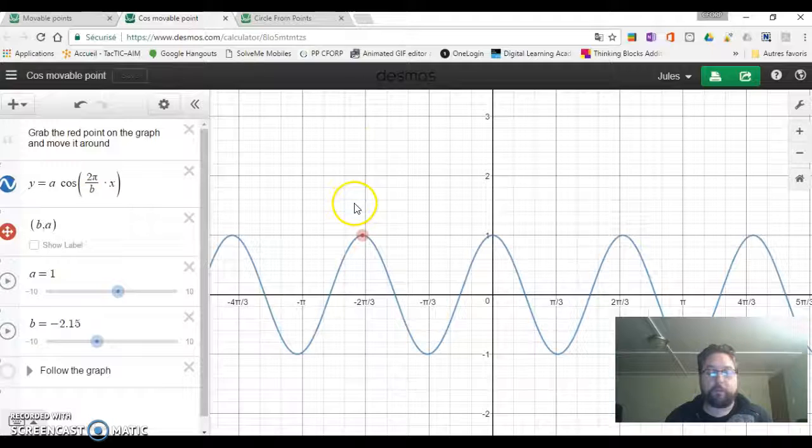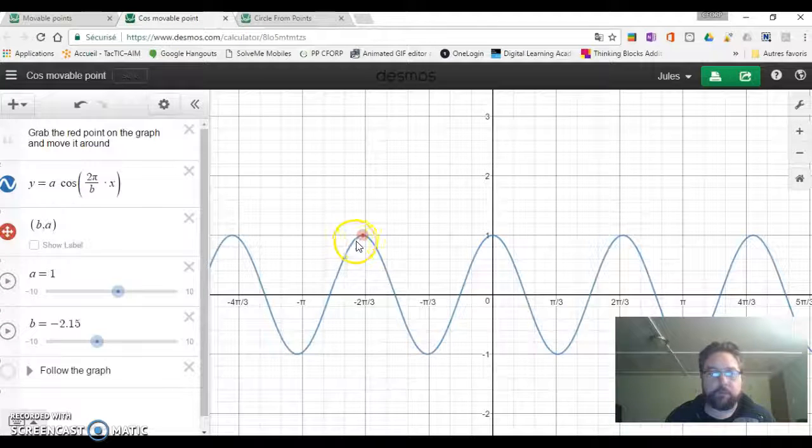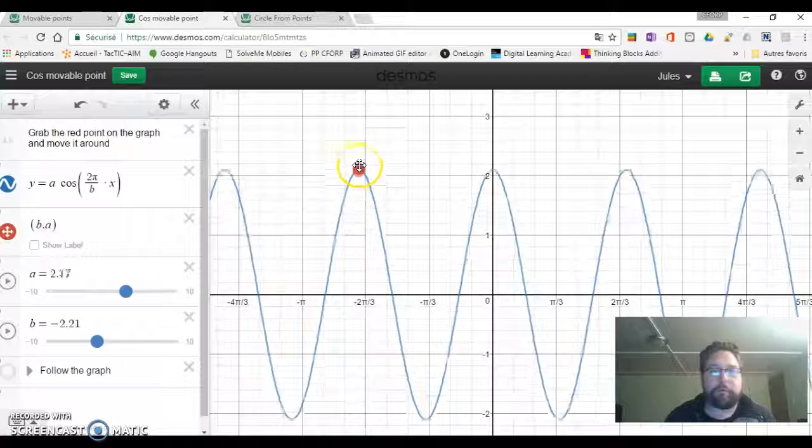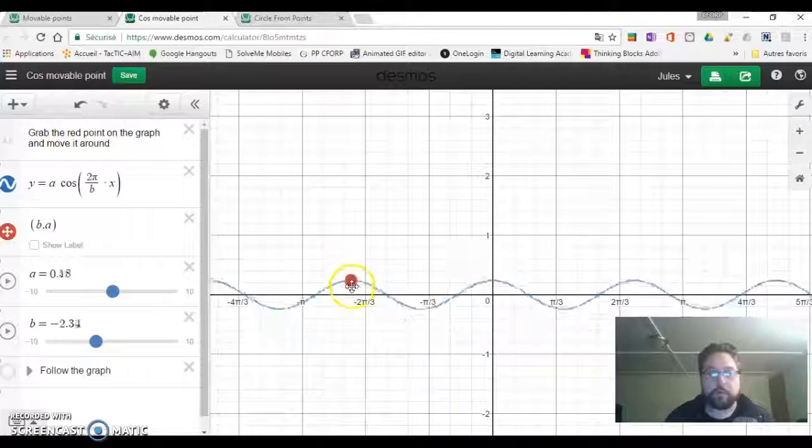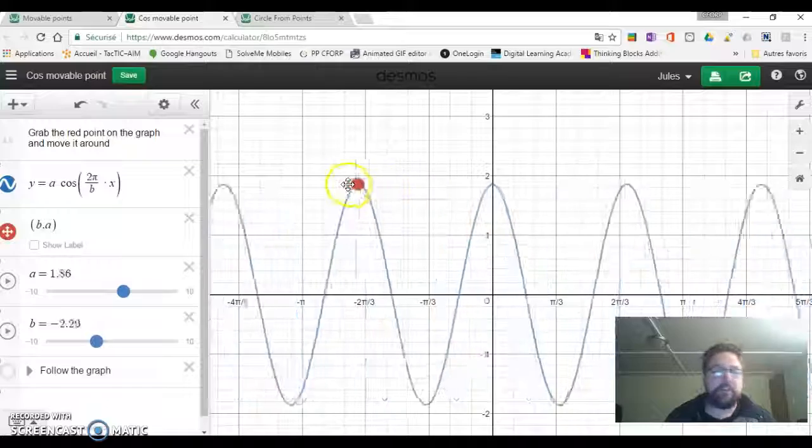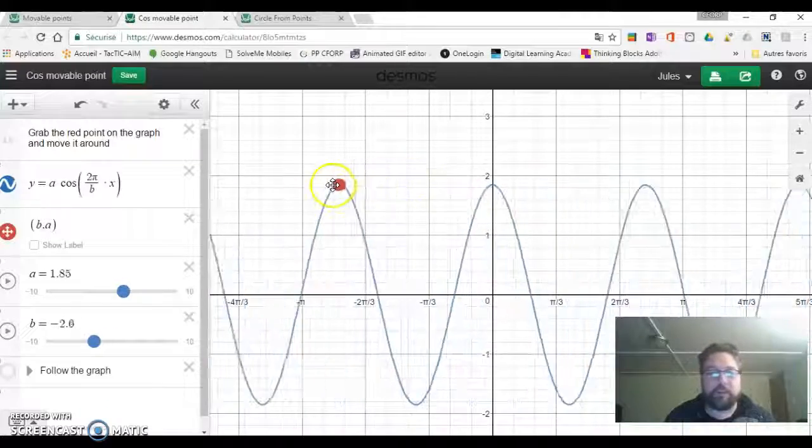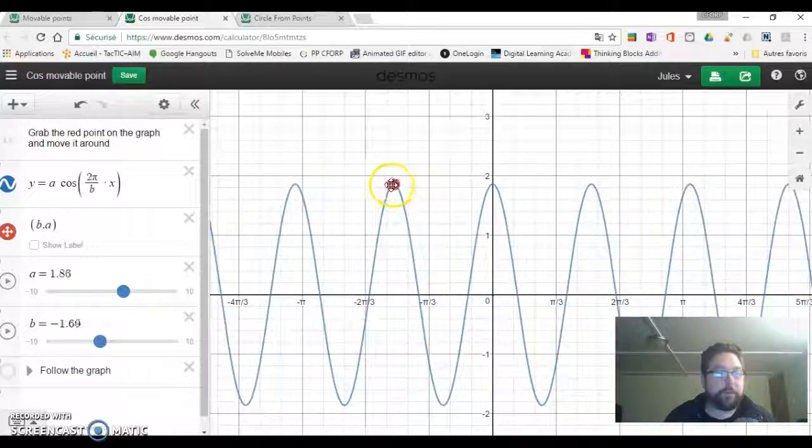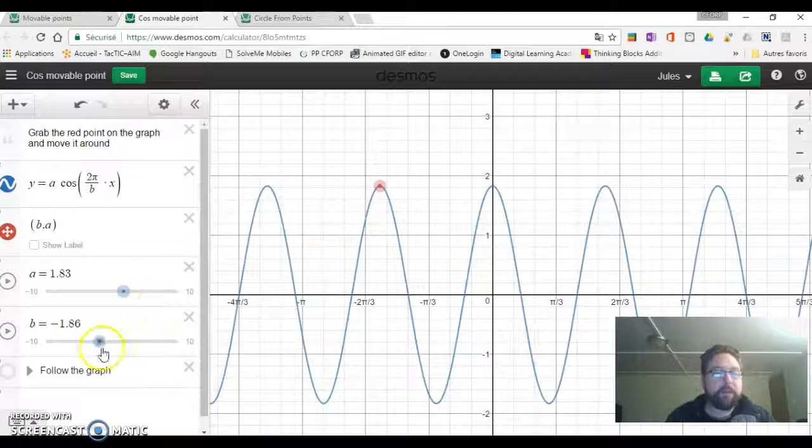Another one that amazes me is the cosine. We can look at what the parameters A and B do on a cosine, and we see that A is going to change the amplitude, B is going to change the frequency. It's very interesting.